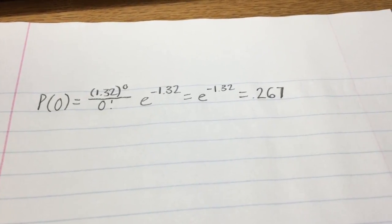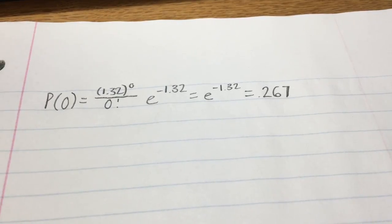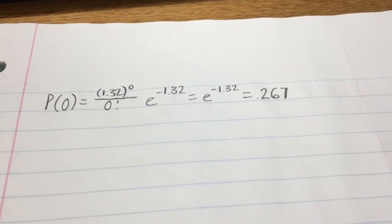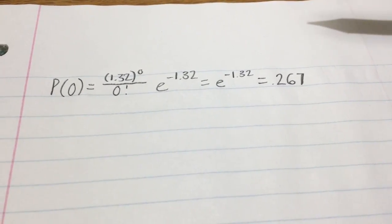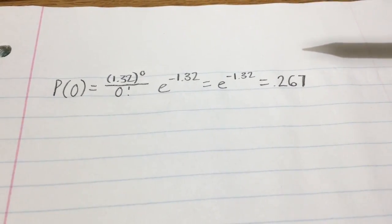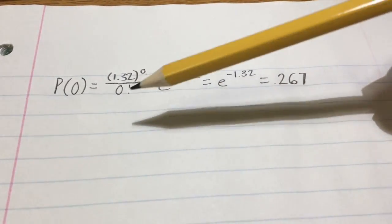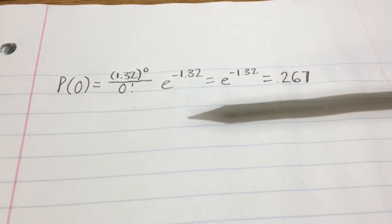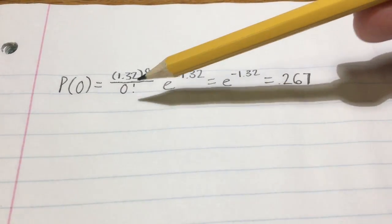So for Question 2, parts A, B, and C, we will be using the Poisson probability distribution. For part A, since we are given the lambda of 1.32, we can just plug that in. And we are given our number of successes at zero, so just plug that in here and here.